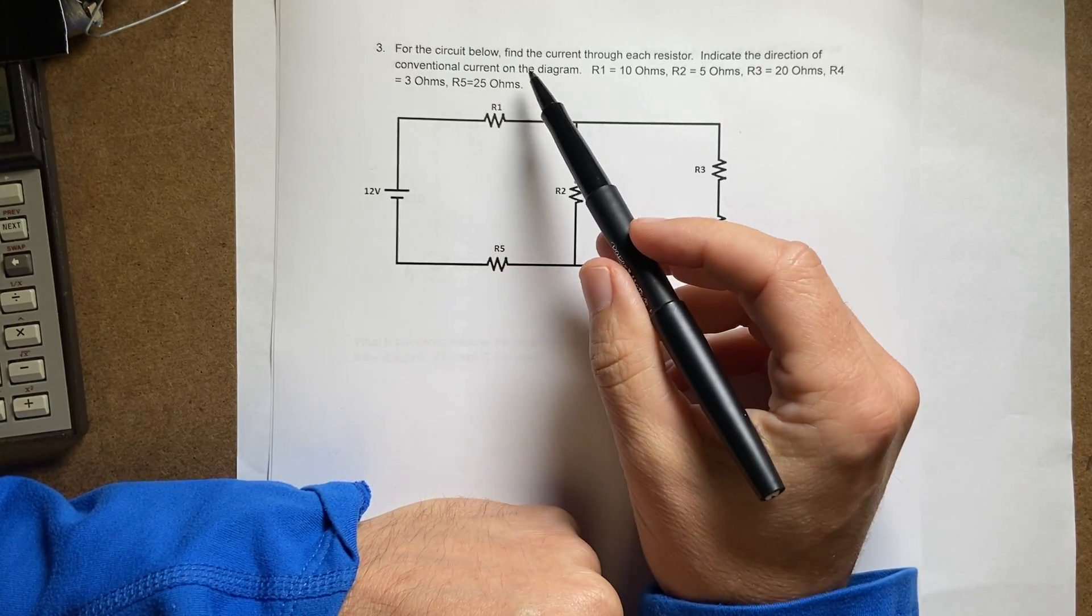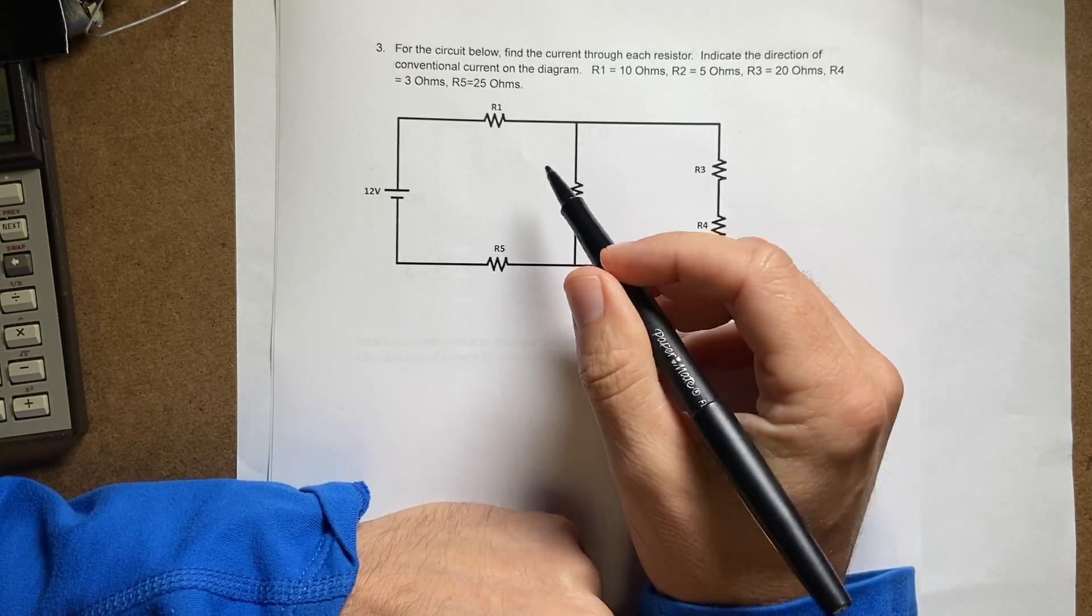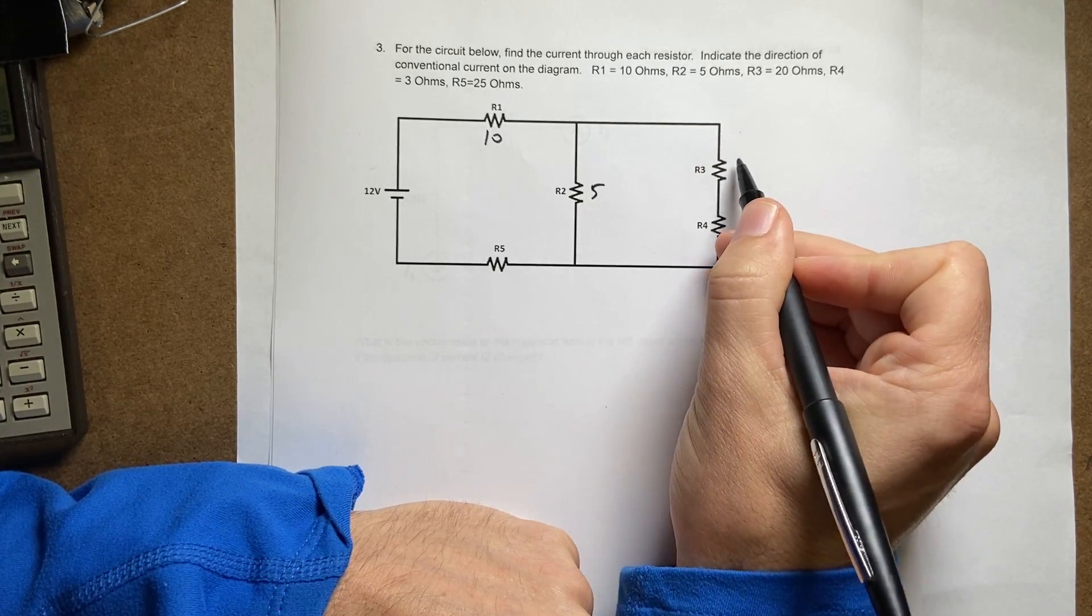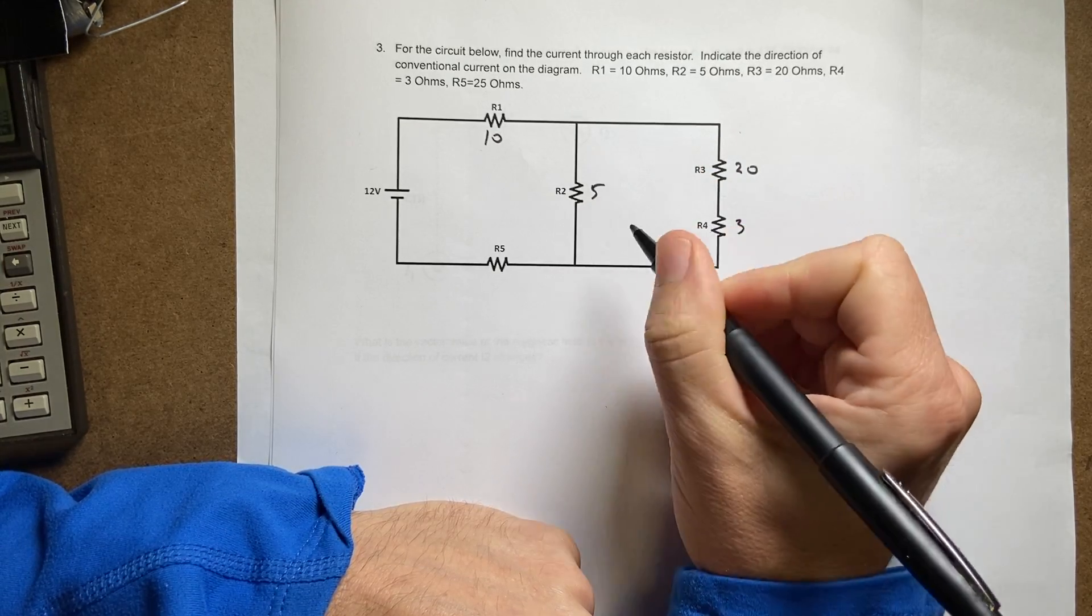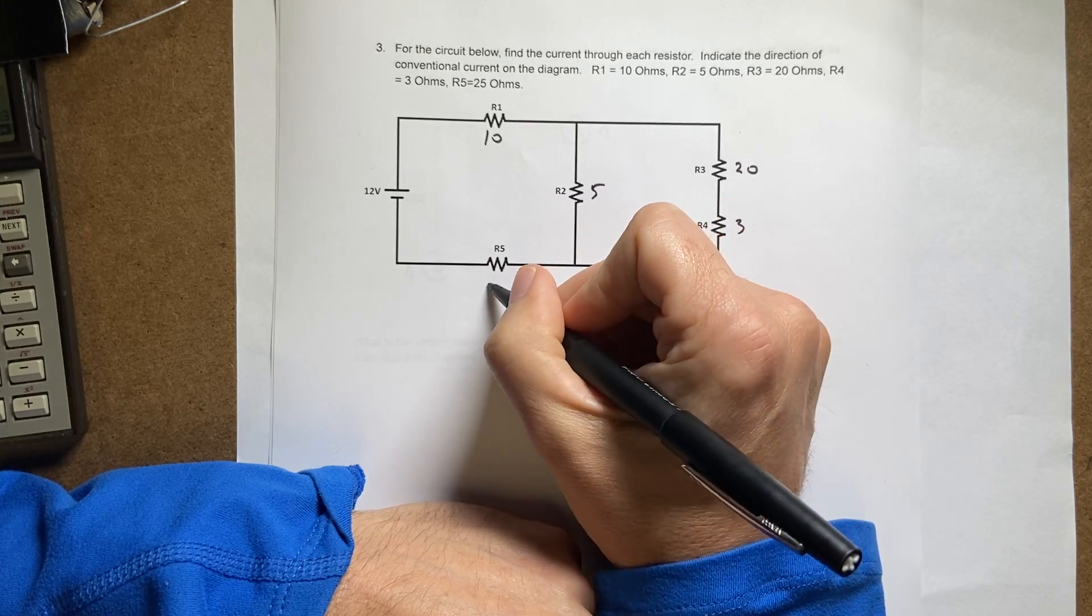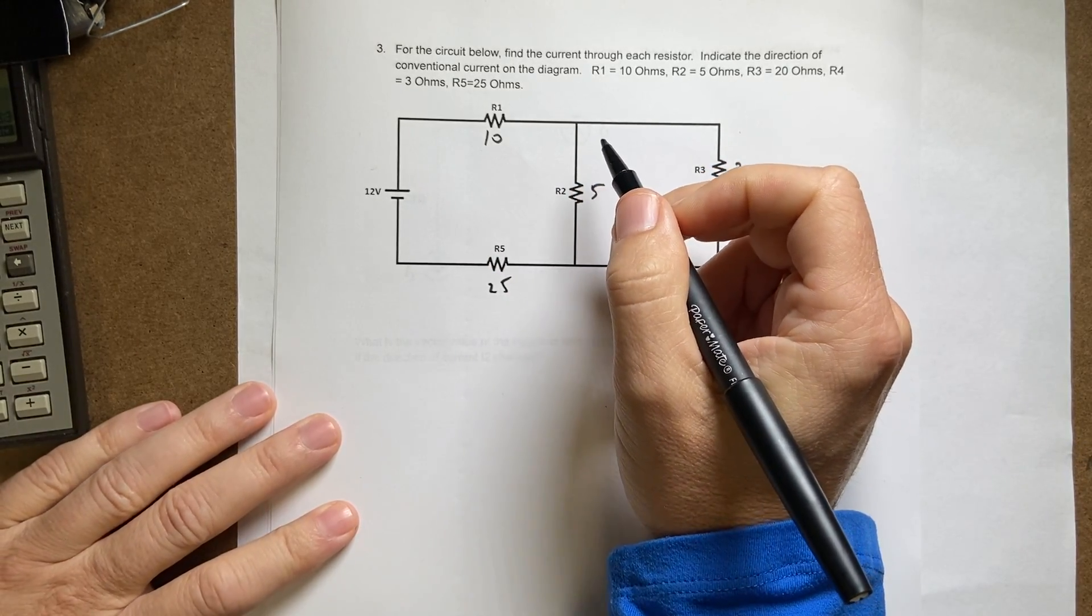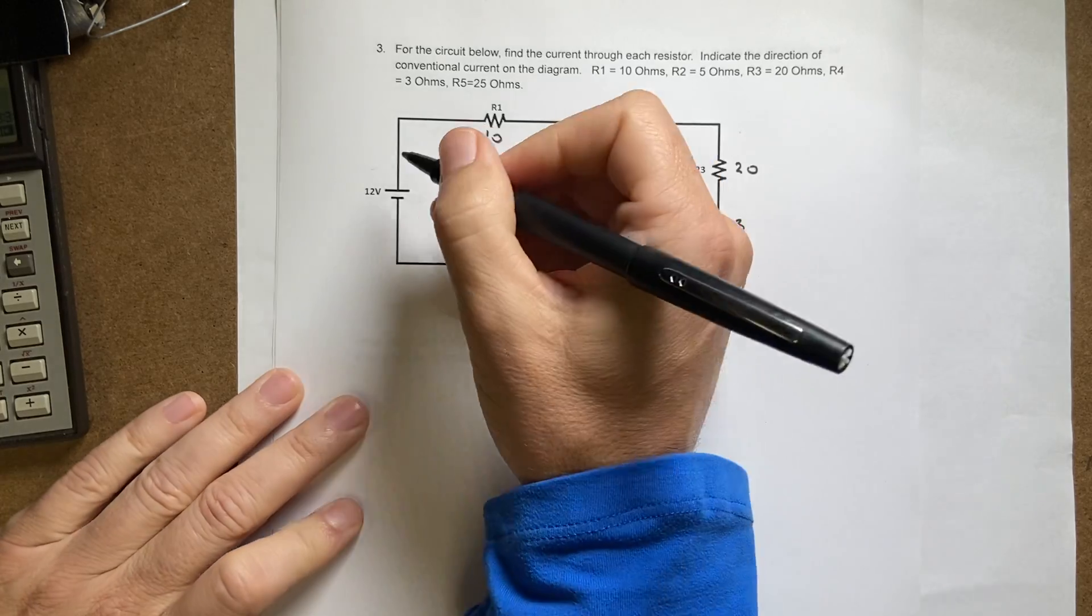So R1 is 10, R2 is 5, R3 is 20, R4 is 3, R5 is 25 ohms. Okay, so I want to find the current. Let's just go ahead and pick—I have a 12 volt battery right there.